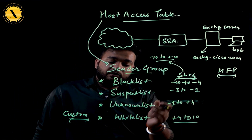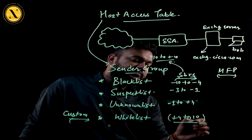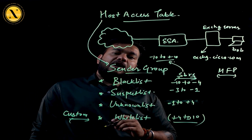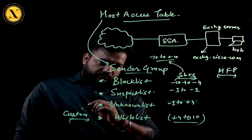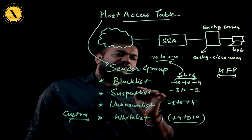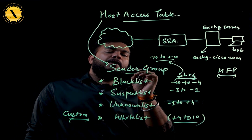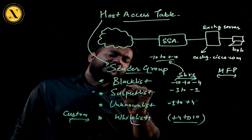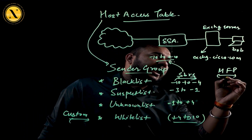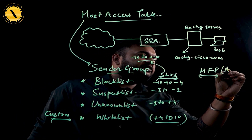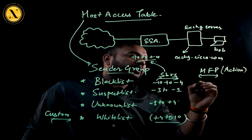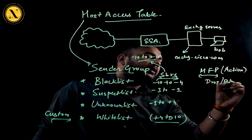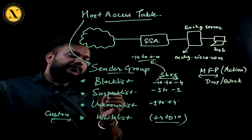Users whose SBRS score falls within that whitelist range will be allowed into the organization. When I define a sender group, I also need to define what action will be taken — that is done through the mail flow policy. For the blacklist sender group, the action I'm going to deploy is to drop or block that particular email.